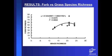Looking at forb species richness against grass species richness, there was a somewhat positive correlation, though not very strong. It is still significant, suggesting there is some sort of relationship between forb richness and grass richness.